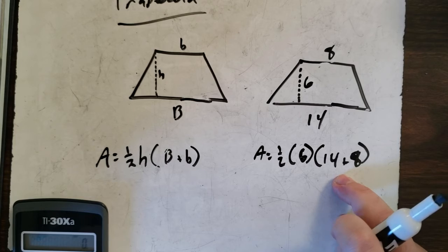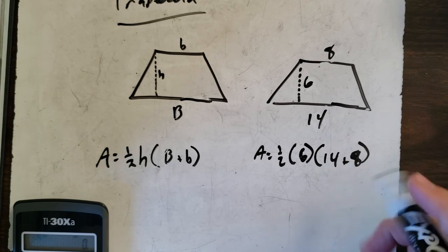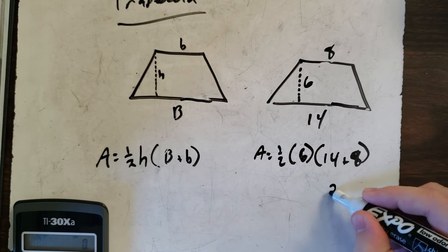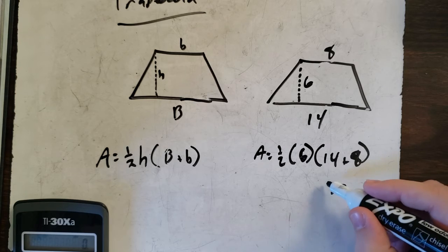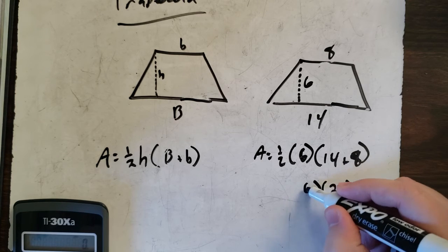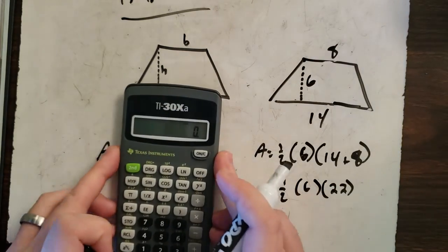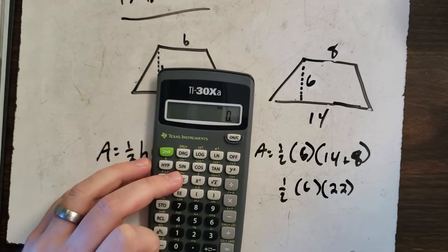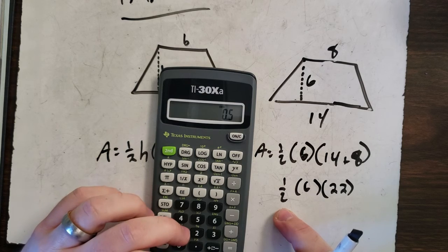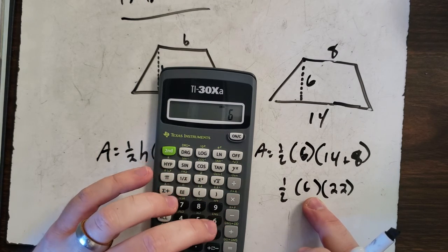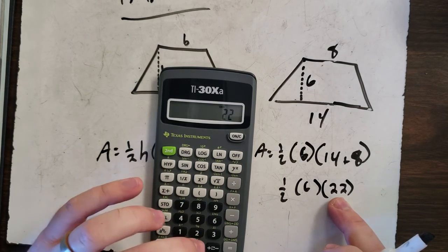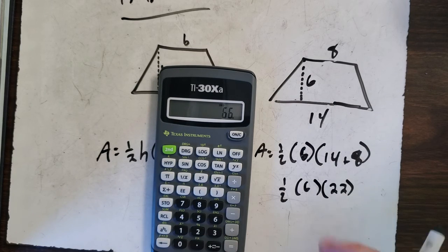Now, add these up first. Order of operations. 14 plus eight equals 22. Bring that down with a six and our one-half, and multiply straight through. You want to use a calculator? That's fine. One-half is 0.5 times six times 22. And the answer is 66.